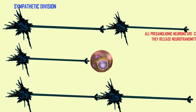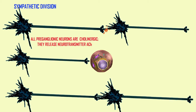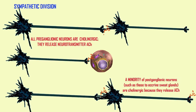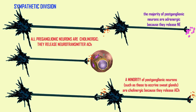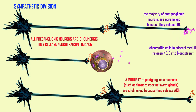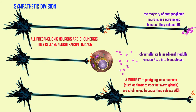Not only are there differences between the autonomic nervous system and somatic nervous system, and between the sympathetic and parasympathetic divisions, there are differences within the sympathetic division. While all pre-ganglionic neurons are cholinergic, releasing acetylcholine, the majority of post-ganglionic neurons are adrenergic because they release norepinephrine. In the adrenal medulla, the pre-ganglionic neurons synapse with chromaffin cells, which release norepinephrine and epinephrine into the bloodstream. A minority of post-ganglionic neurons, such as those to eccrine sweat glands, are actually cholinergic because they release acetylcholine.